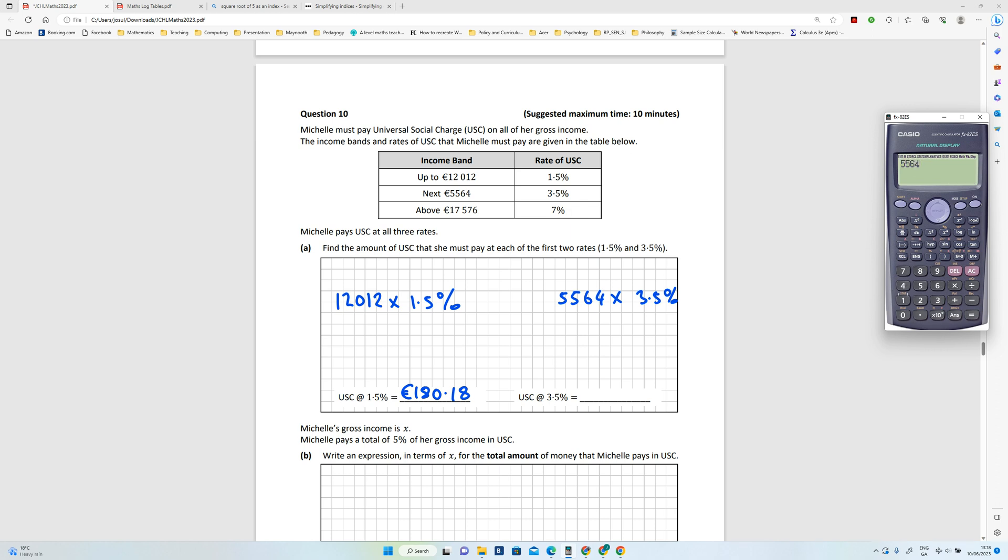Second one then, it's 5,564 multiplied by 0.035, or three and a half percent, and that is 194 euro and 74 cent.